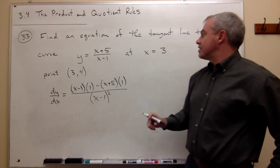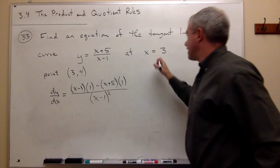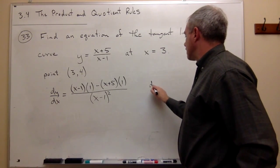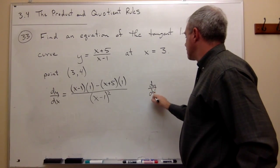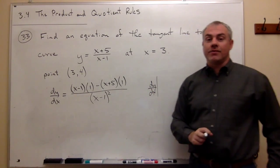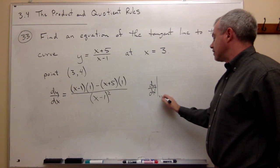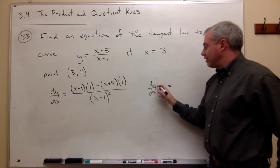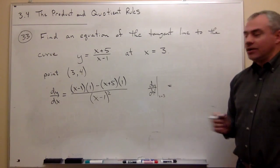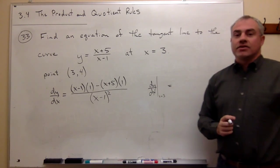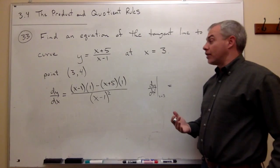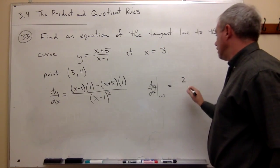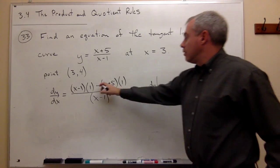I want to know what is the derivative when x is equal to 3. So I'll write dy dx with a little bar and x equals 3, which says what's the derivative evaluated when x is equal to 3. So let's put in 3 for x. I get 3 minus 1, which is 2, times 1, minus,